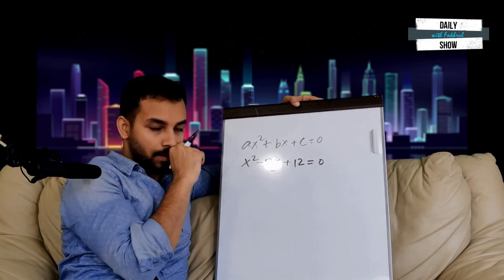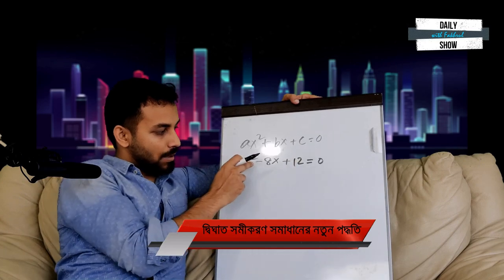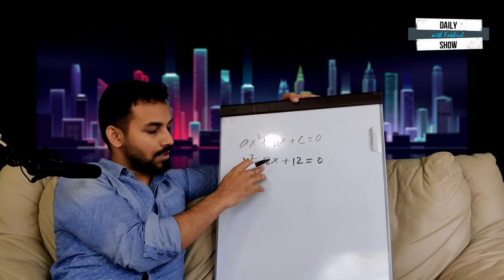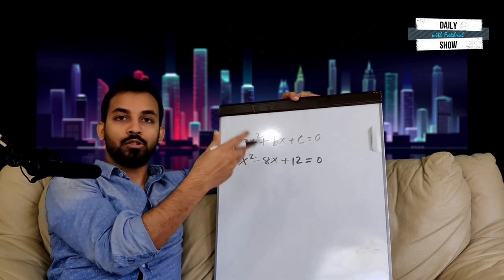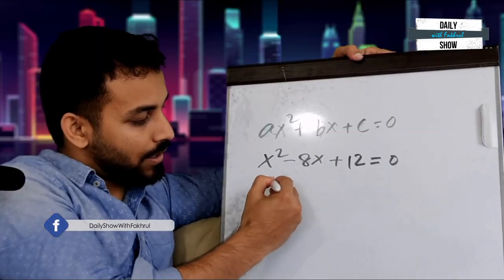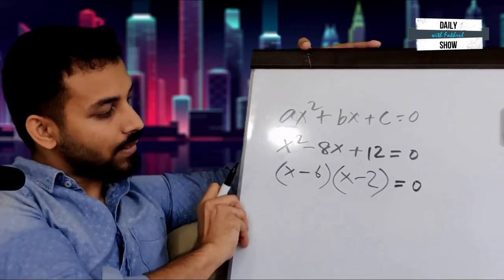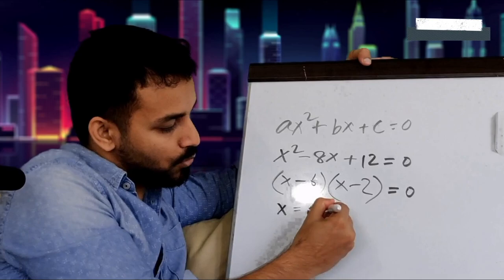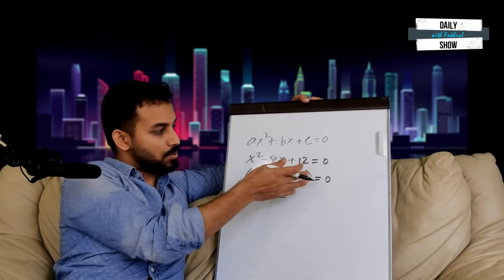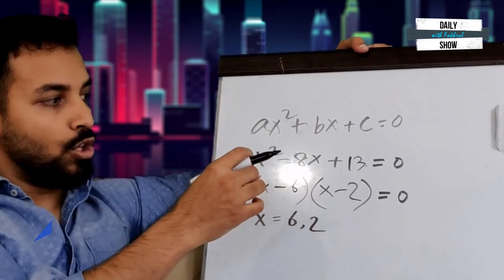Let's start with a simple example. We have a quadratic equation x squared minus 8x plus 12 equals zero. We have to solve this equation. We can factor it: x minus 6 times x minus 2 equals zero. We have to guess the factors.